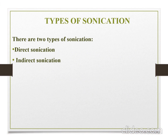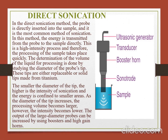Types of sonication. There are two types of sonication: direct sonication and indirect sonication. In direct sonication, the probe is directly inserted into the sample — this is the most common method of sonication. In this method, the energy is transmitted from the probe to the sample directly. This is a high-intensity process and the processing of the sample takes place very quickly.